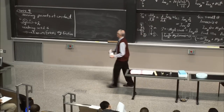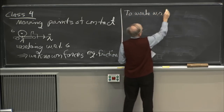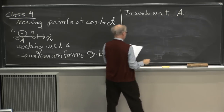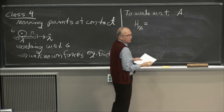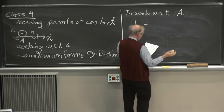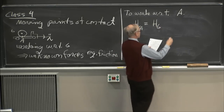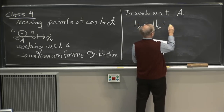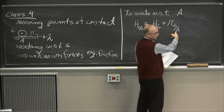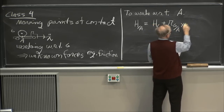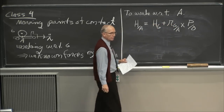To work with respect to A, a moving (possibly accelerating) point, you need a theorem: the angular momentum with respect to A equals the angular momentum around G — which is easier to calculate — plus r_GA cross the linear momentum of the system with respect to the inertial frame. This is a formula we need.